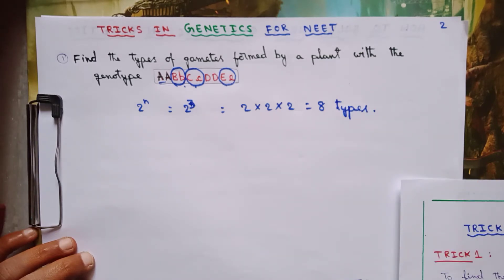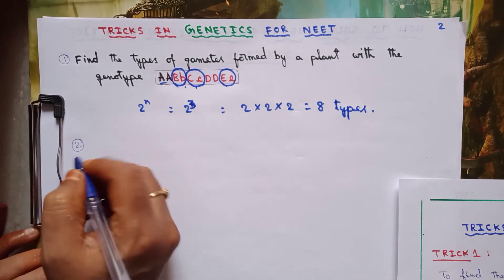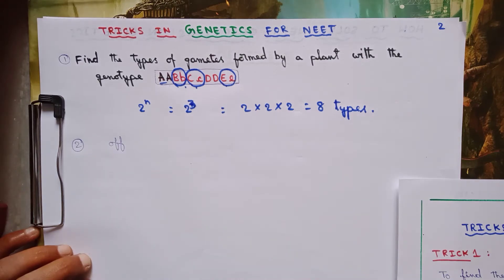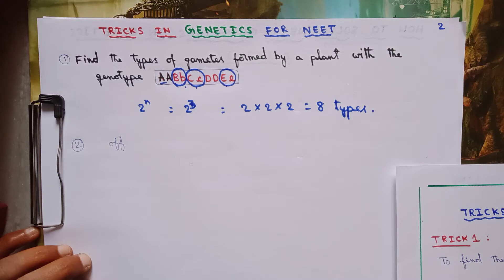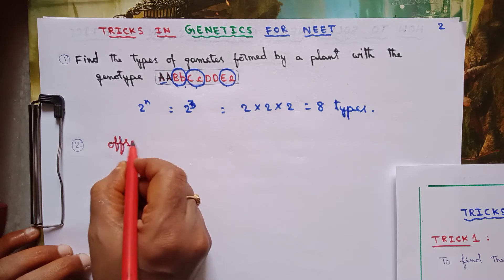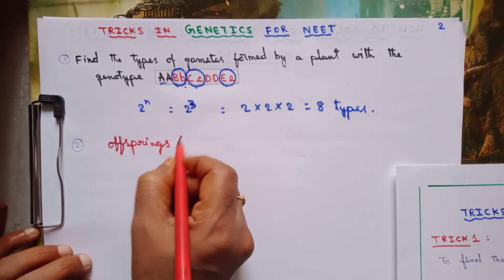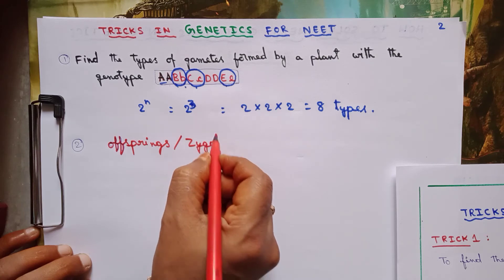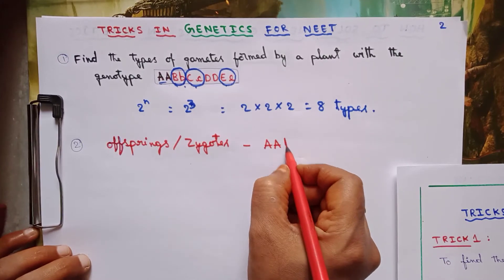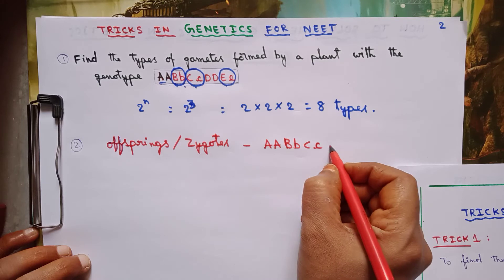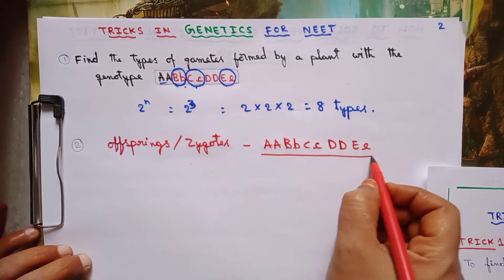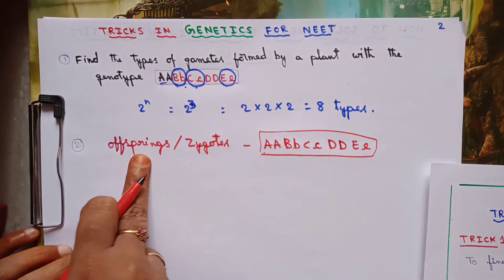Second question: find the types of offsprings or zygotes for the same genotype — capital A capital A, capital B small b, capital C small c, capital D capital D, capital E small e. We need to find the types of offsprings or zygotes formed by a plant with this same genotype.